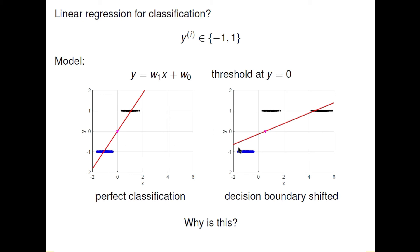Now consider a case where linear regression might not work well. In the second graph, if you have more data points at y equal to one, the decision boundary shifts — this is not ideal. If more data points are towards the right and the decision boundary shifts, then points around x equal to zero to two might be classified as minus one. At x equal to 0.1, the predicted y would be negative, so it gets classified as minus one, which is incorrect.